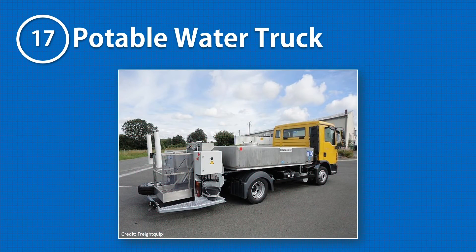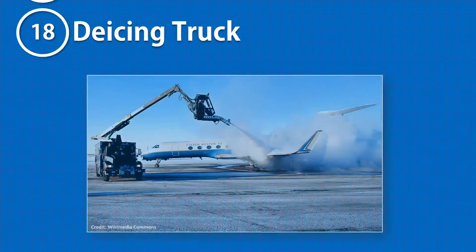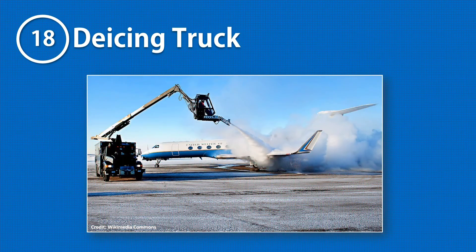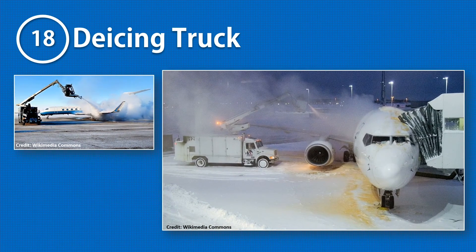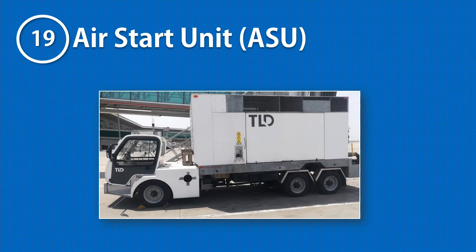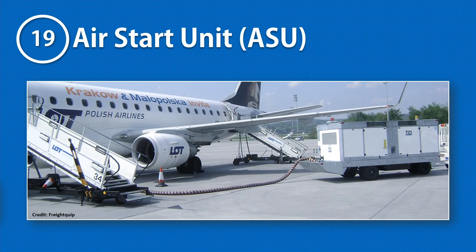A potable water truck is another simple ground support equipment used for replenishing potable water in the aircraft after each flight. A de-icing truck is an important ground support equipment used for spraying de-icing and anti-icing fluids over aircrafts operating at extremely cold airports. The ground support equipment that generally operates at the very end of ramp operations is an air start unit, or simply ASU — a high-pressure air compressor used for pneumatically kickstarting an aircraft jet engine.